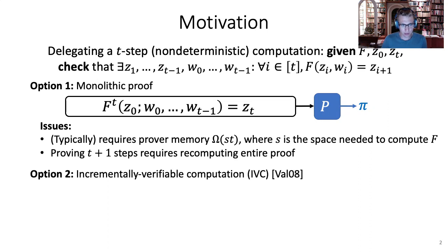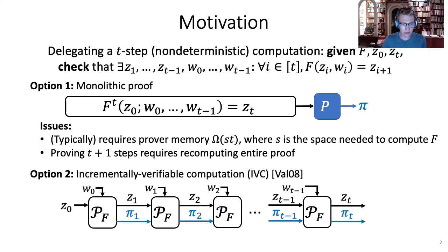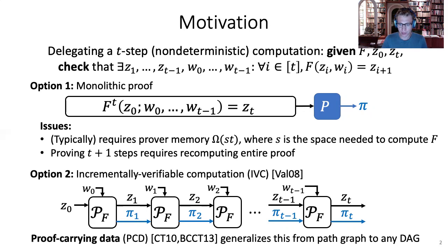The second option resolves all of these issues and it's called incrementally verifiable computation, or IVC for short. The idea is to interleave the evaluation with the computation of the proof. At every step we still have Zi and Wi, but we also have a proof Pi which asserts that all of the previous i steps were done correctly. The IVC prover can advance the computation, compute Zi+1, and also compute the next proof Pi+1. IVC is for computations over path graphs, but this has been generalized to more generic DAGs, and we call this proof-carrying data.